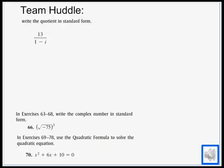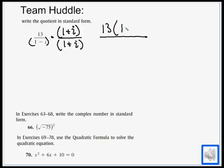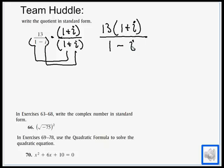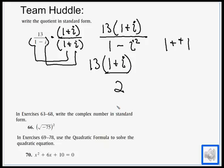Practice solution 1: multiply by the complex conjugate 1 plus i in both numerator and denominator. The numerator gives 13 times the quantity (1 + i). For the denominator, since it's a sum and difference, first times first is 1, minus i times i is i squared which is negative 1, so 1 minus negative 1 equals 1 plus 1 equals 2. Answer: 13(1 + i) / 2.